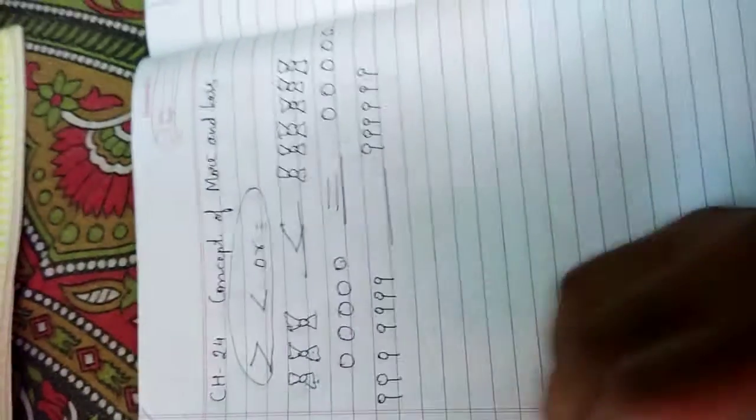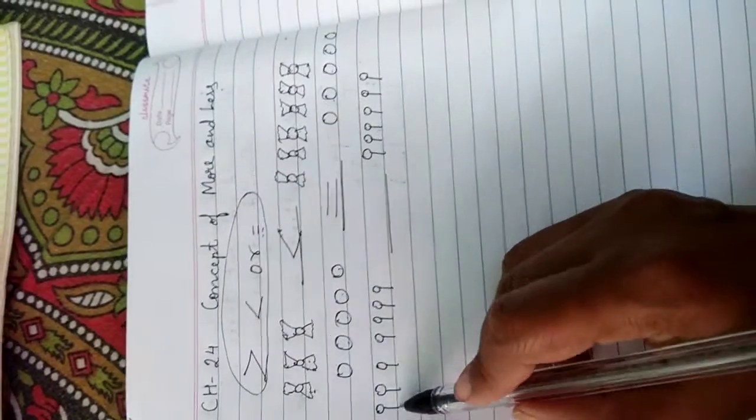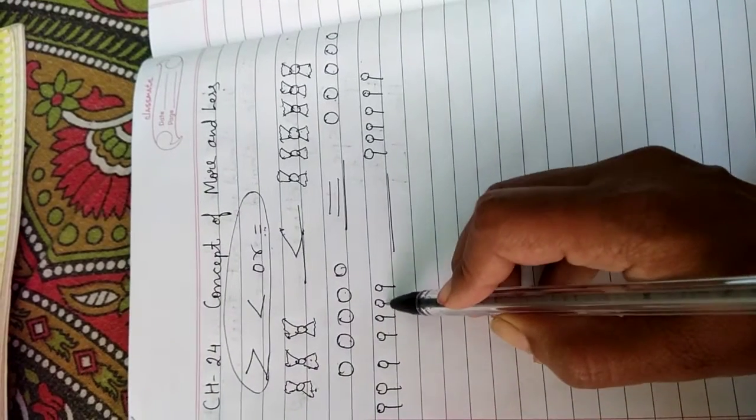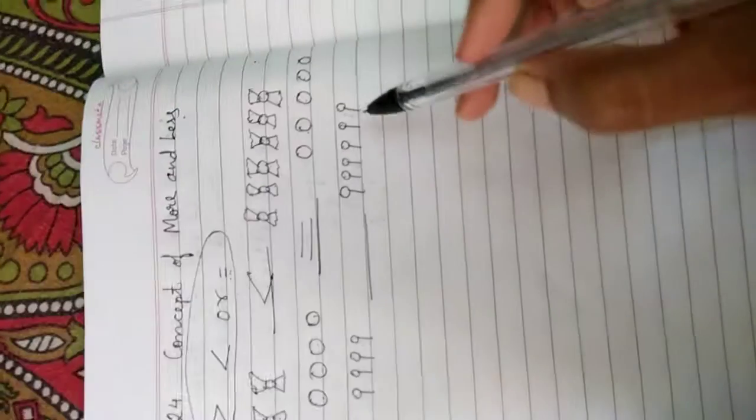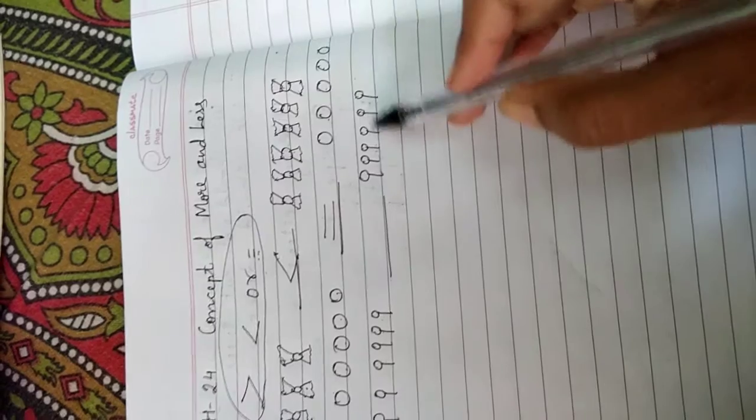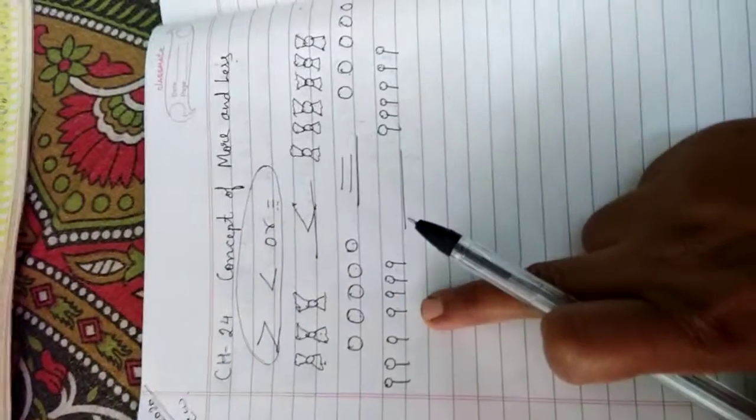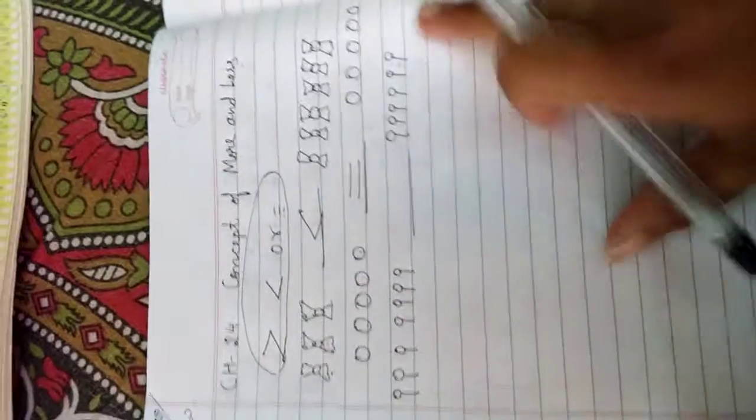Here, lollipops. Count them. 1, 2, 3, 4, 5, 6, 7. And here, 1, 2, 3, 4, 5, 6. So, 6 or 7, 7 is more.